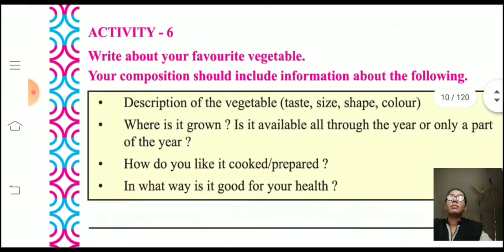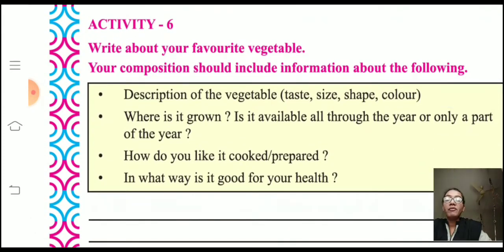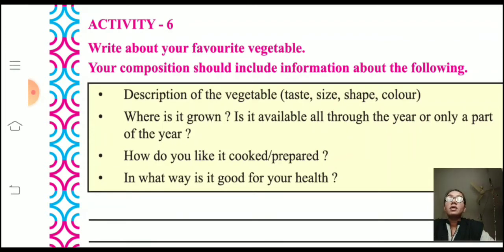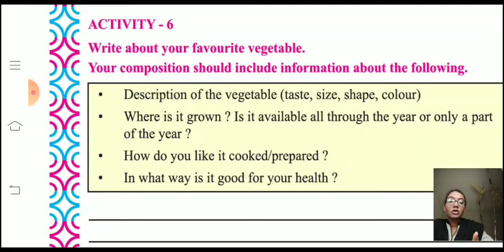Now Activity Number Six: write about your favorite vegetable. Your composition should include the following information. First, a description of the vegetable — its taste, size, shape, and color. Second, where it is grown.